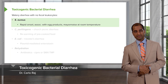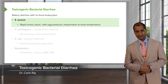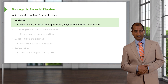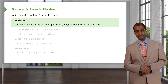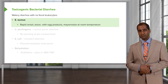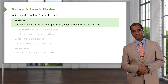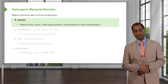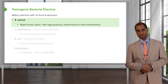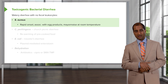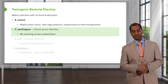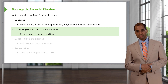Talking about toxigenic bacterial diarrhea — we're going into a bit more detail. We have watery diarrhea, but please note that the feces does not contain leukocytes — it is WBC-free. Staph aureus is ridiculously quick — within six hours — associated with mayonnaise at room temperature. Don't ever do that; put your mayo back in the fridge. Also egg products — potato salad with mayo is the common denominator. Clostridium perfringens involves re-warming of pre-cooked food — the so-called 'church picnic diarrhea.'